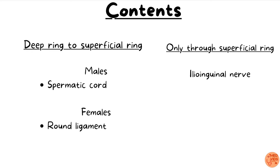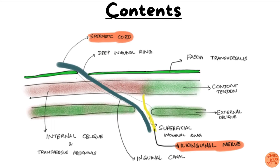The contents of the inguinal canal: in males, the spermatic cord passes from the deep inguinal ring through the inguinal canal and exits through the superficial inguinal ring into the scrotum. In females, the structure present from the deep ring to the superficial ring is the round ligament of the uterus, which is a remnant structure. There is also the ilio-inguinal nerve, which does not enter through the deep inguinal ring but instead enters the inguinal canal through the muscles of the anterior abdominal wall, passing out through the superficial inguinal ring.